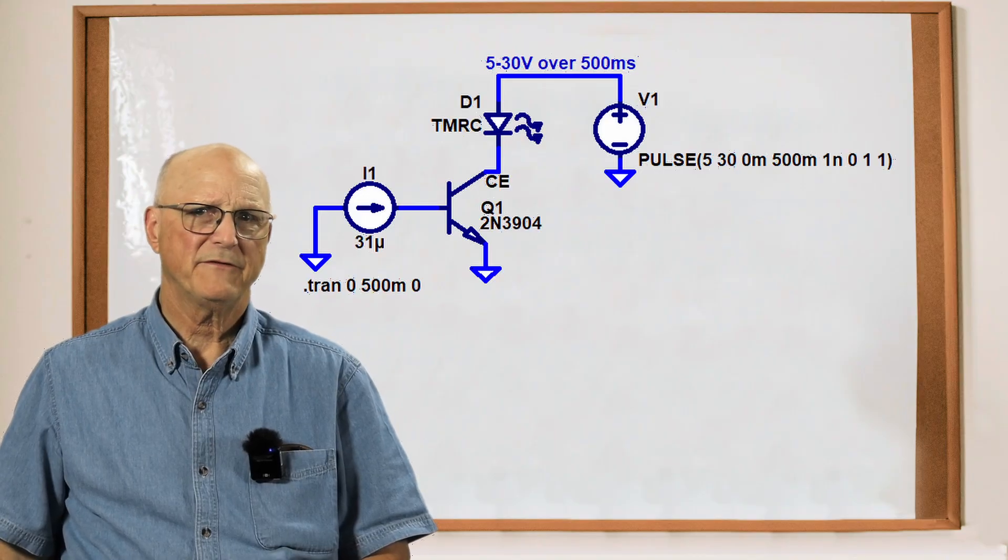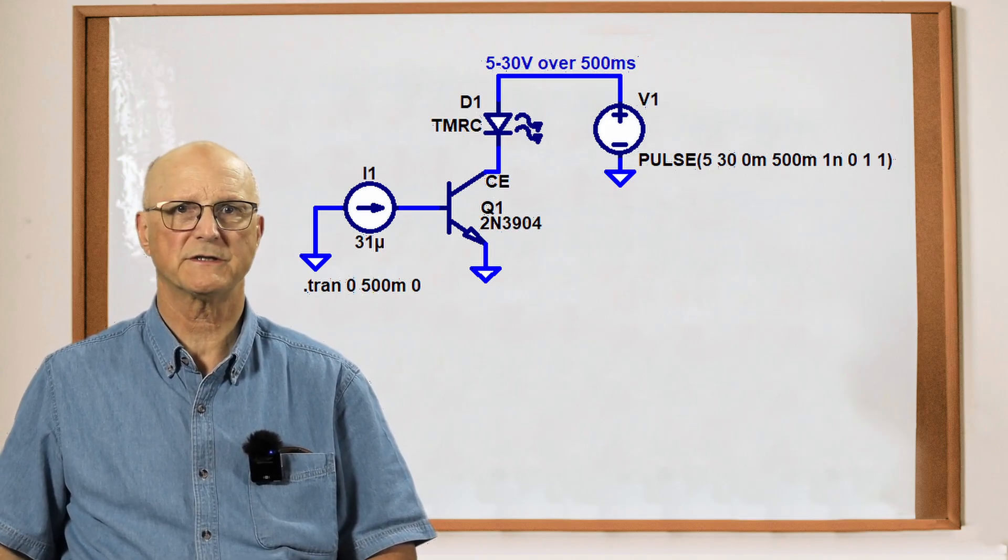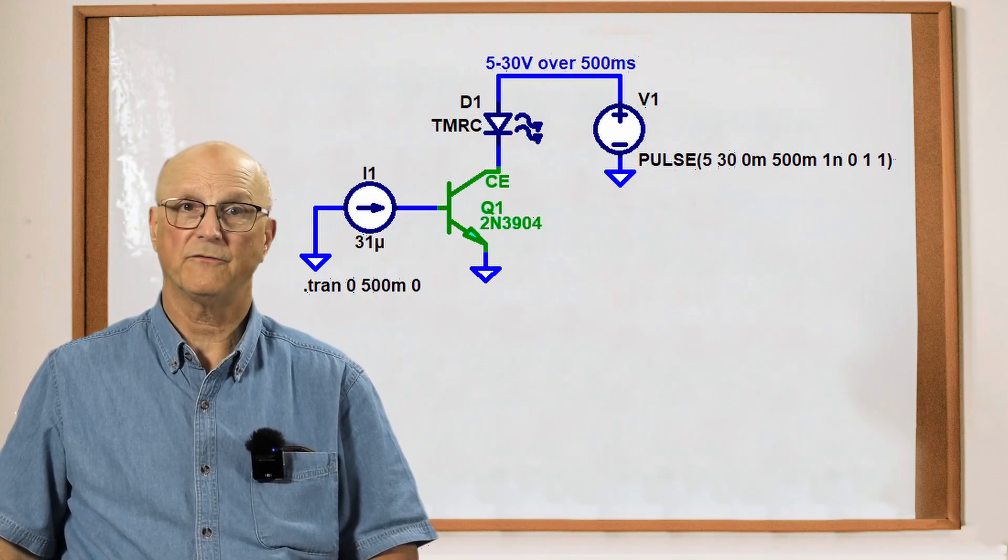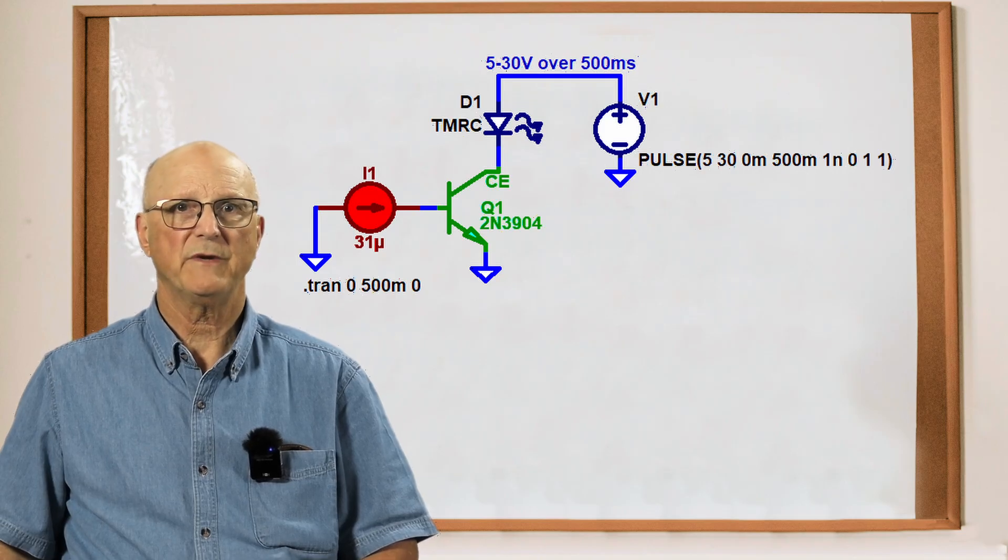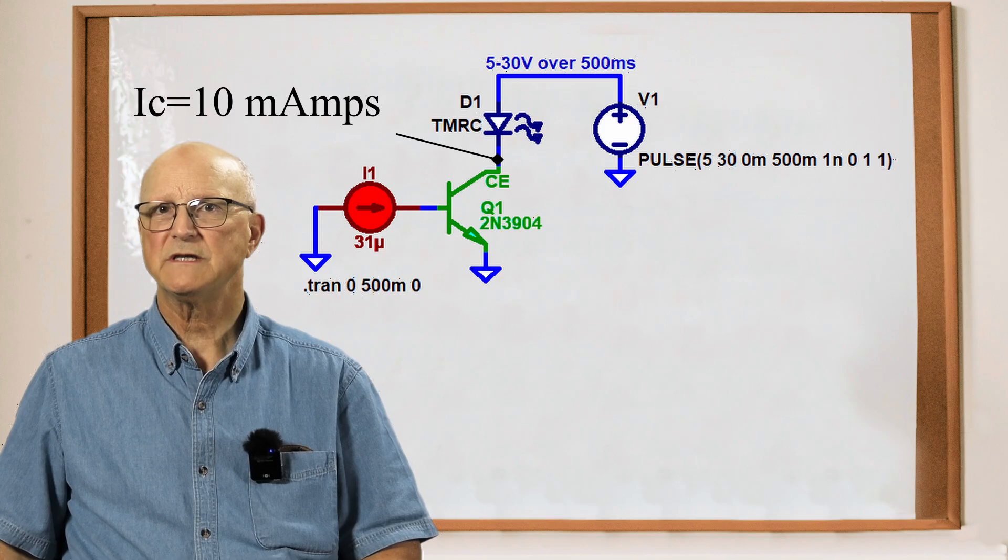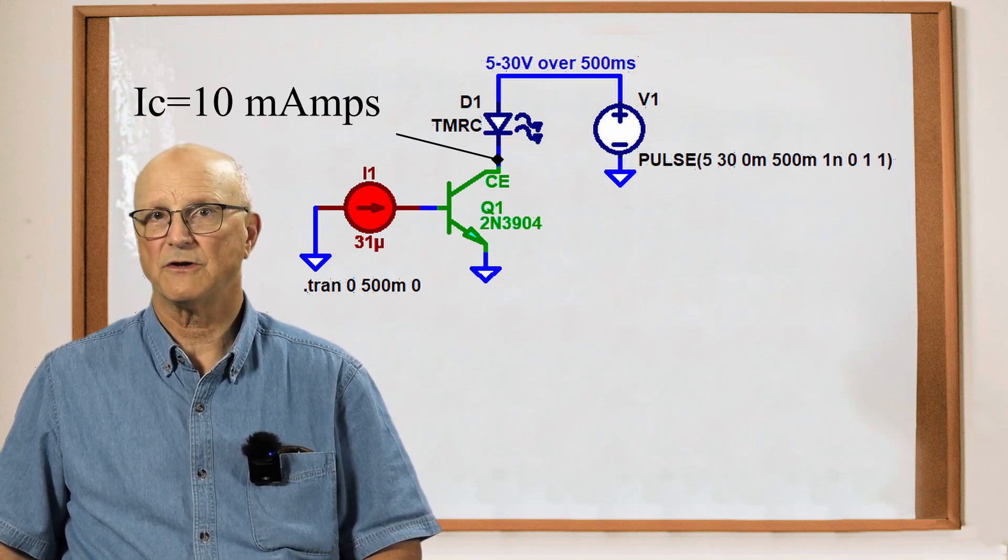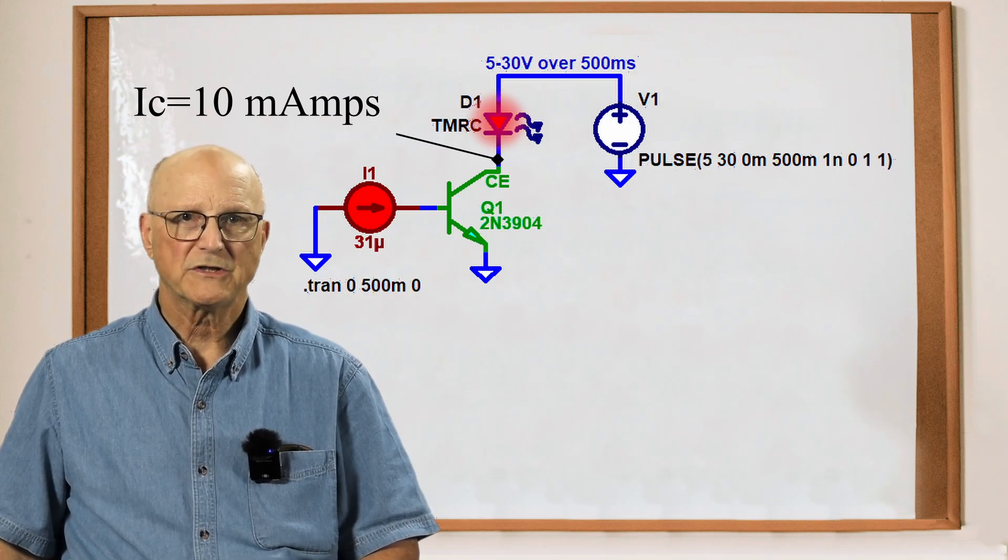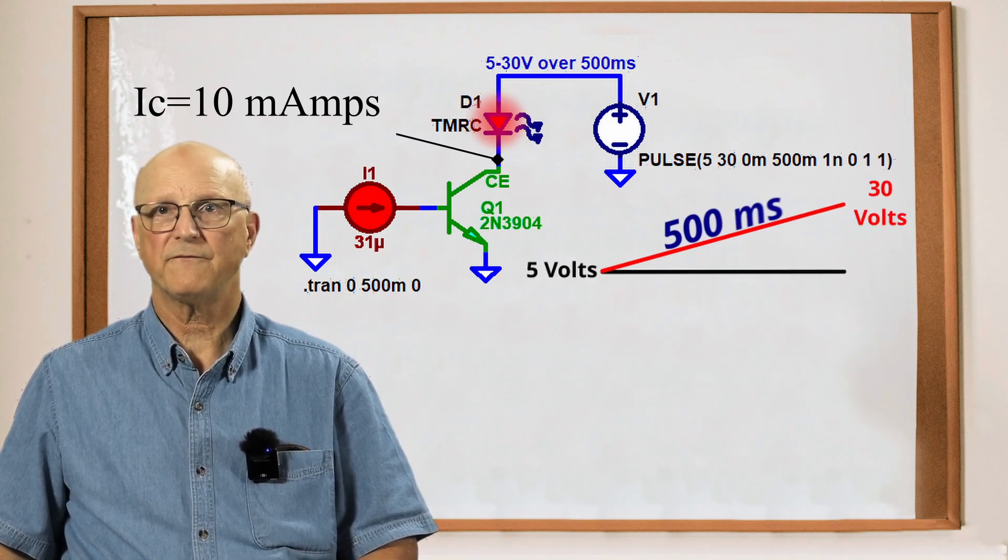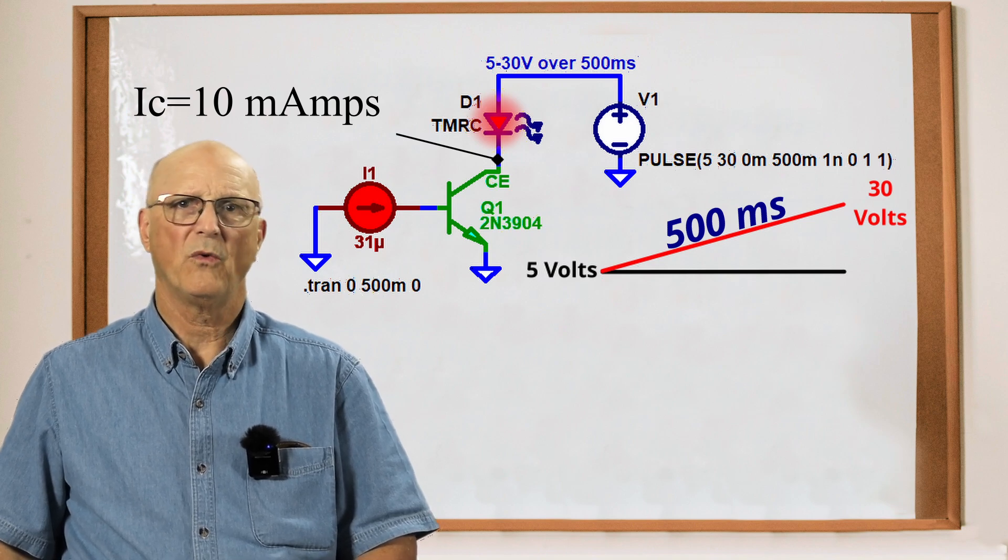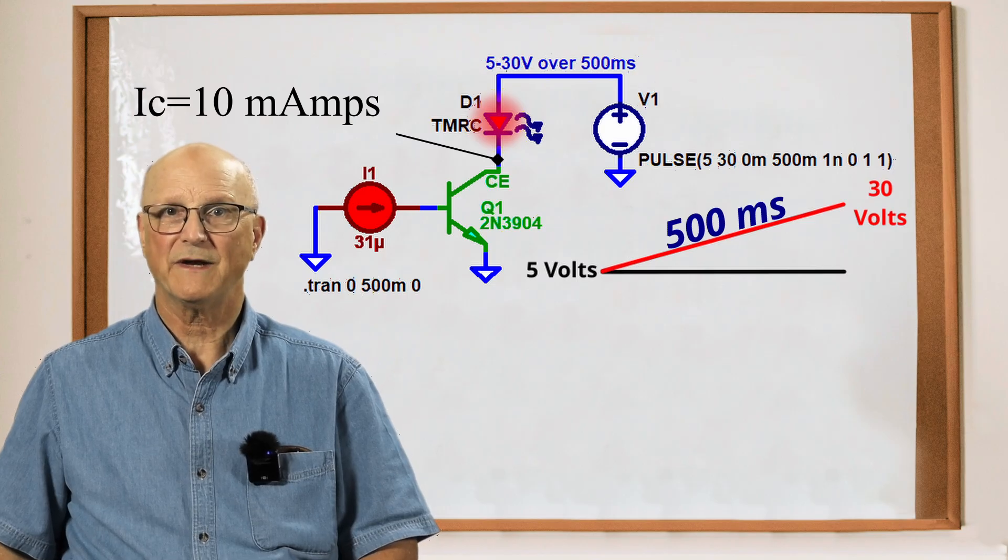So here is my representative test circuit to demonstrate the effect of collector-emitter voltage on the current gain of a bipolar junction transistor. Here you can see I have my 2N3904 transistor. I'm driving its base with a constant 31 microamp current source. This should give me a collector current of about 10 milliamps with LTSPICE's default values for the 2N3904 transistor. This is a good current to drive the collector load of the red LED. The voltage source is a ramp from 5 volts DC to 30 volts DC over a period of 500 milliseconds. So the question is, what is the current gain of the transistor at various input voltages? Well, let's simulate this and see what LTSPICE comes up with.